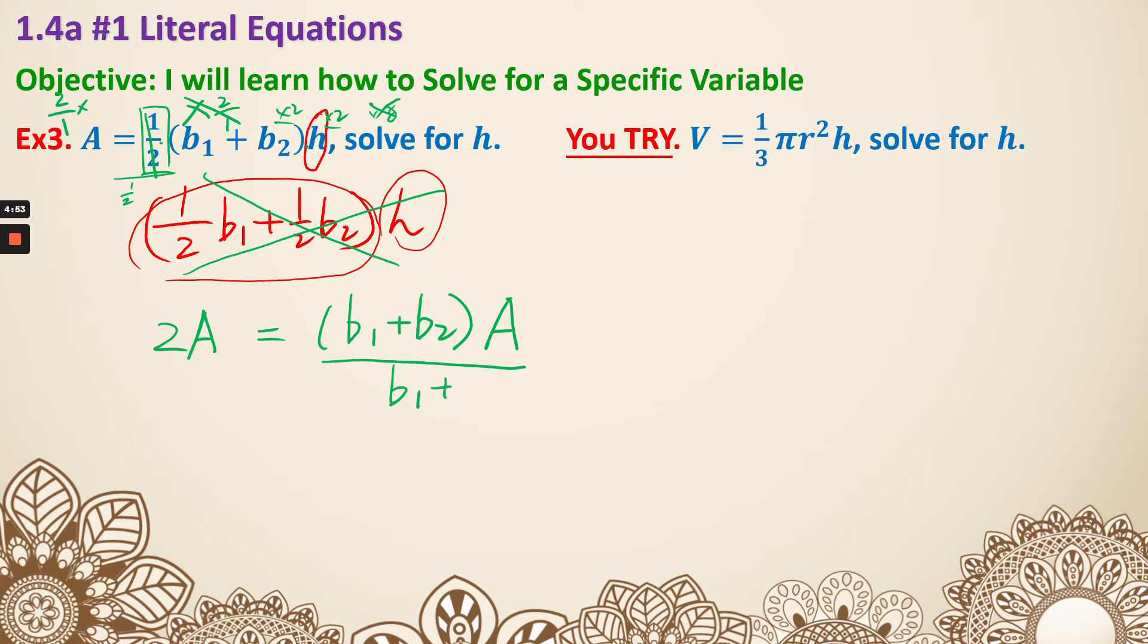Now I need to get rid of the (b₁ + b₂). So I'm going to divide by (b₁ + b₂) on both sides. That's going to give me, well not a, there should be h. That will give me h = 2A/(b₁ + b₂).